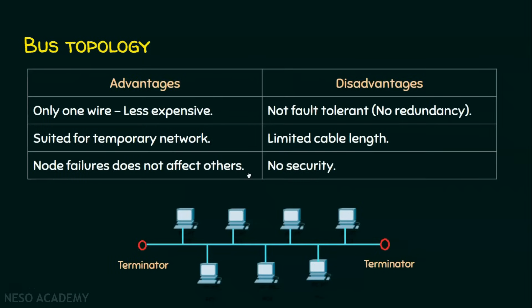The advantages of bus topology: since there is only one wire or cable involved, it is less expensive. If you are going to construct a temporary network that is not going to last for long, you can go for bus topology. Another advantage is that a node failure does not affect the other nodes in the network.